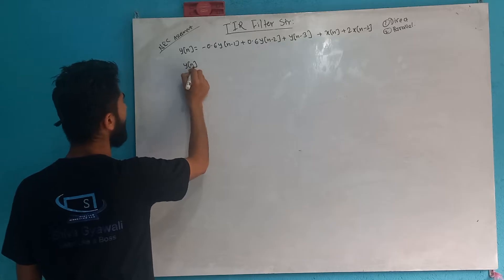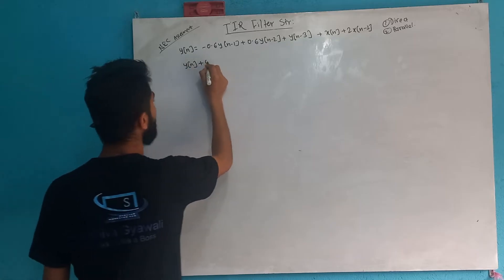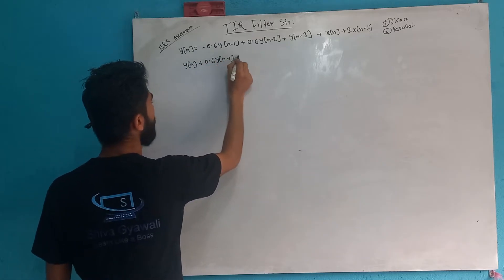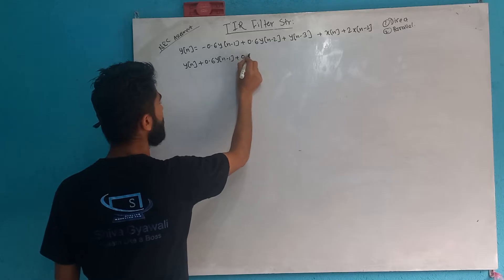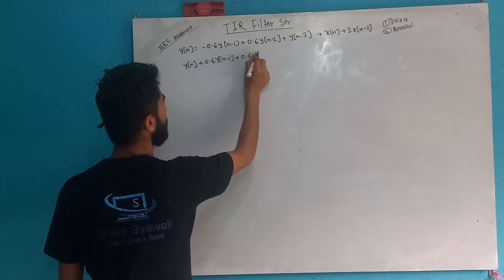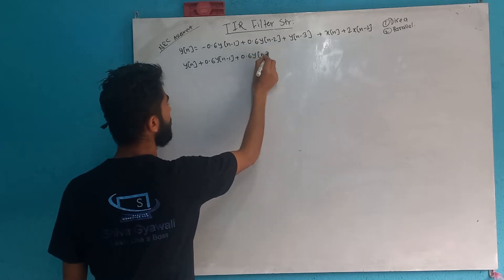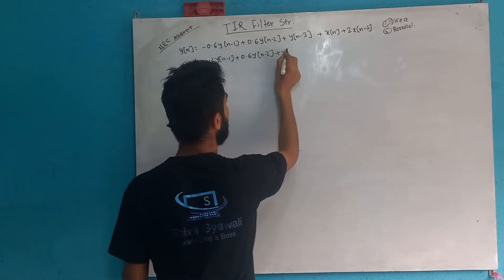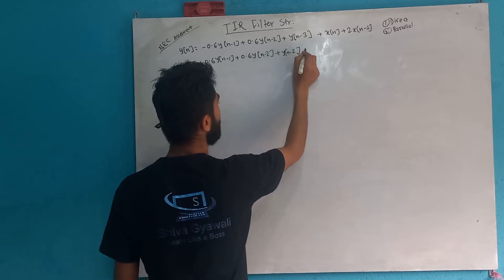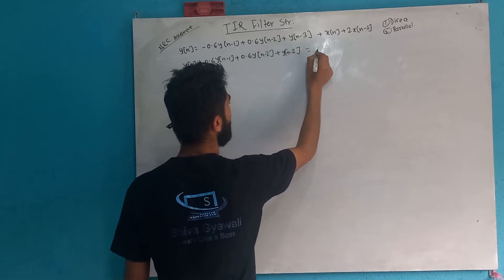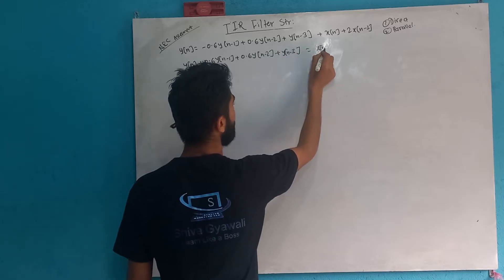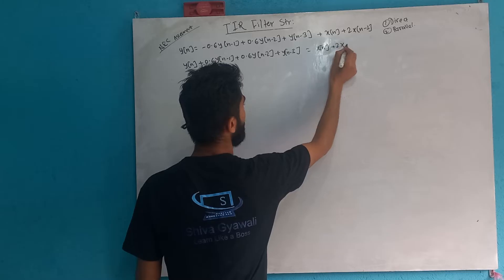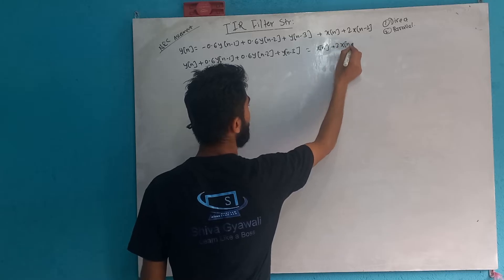Y(n) is equal to 0.6·y(n-1), plus 0.6·y(n-2), plus y(n-3), equals to x, plus 2·x(n-1).